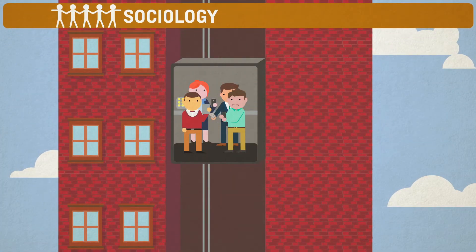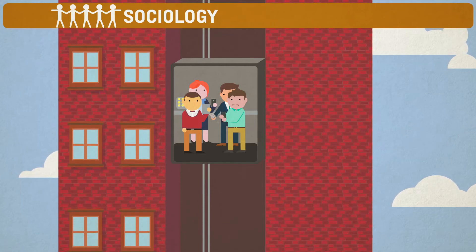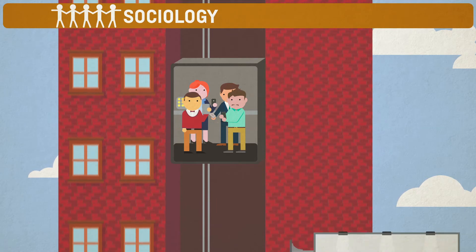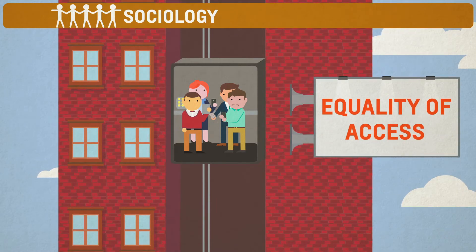Sociology enables UX designers to understand how technology can impact society and the way individuals communicate and make meaning in groups. This perspective allows UX designers to consider issues such as culture, collaboration, and equality of access and the impact of these issues on the design of technological systems.